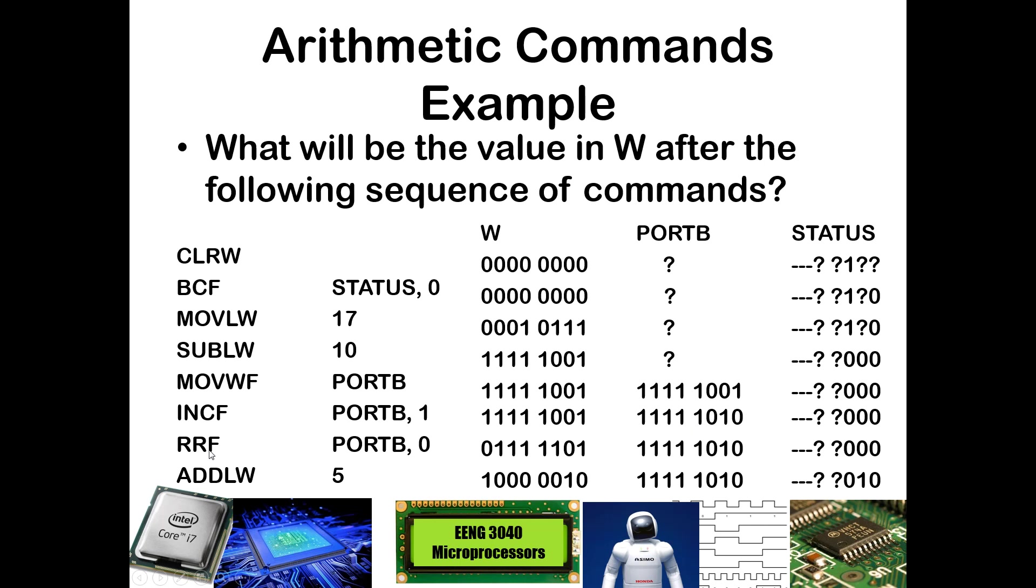Now we're going to rotate right PORTB and put the value into W. The value in PORTB is unchanged. Let's look at what we had in PORTB and look at every bit rotated to the right. The five most significant ones become 0, 1. This 0 got rotated into the carry position, it already was a 0. Then we rotate in the 0 that was in the carry over here. This is the new value put into the W register.